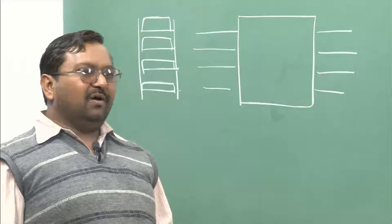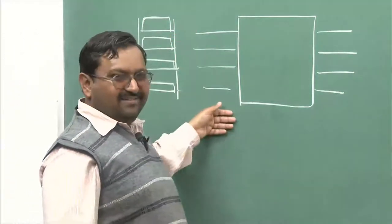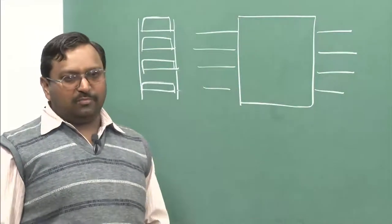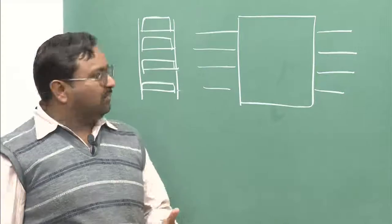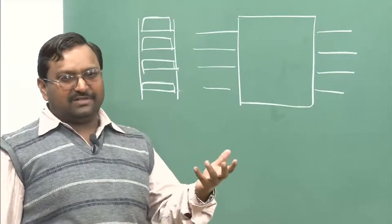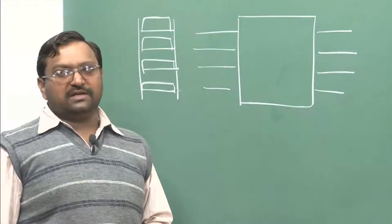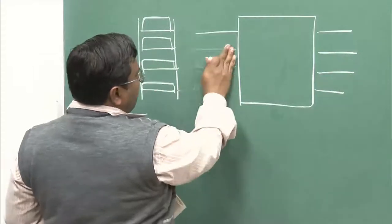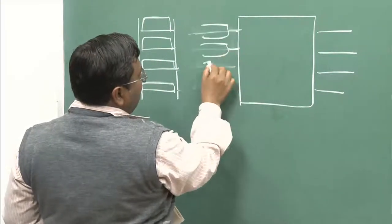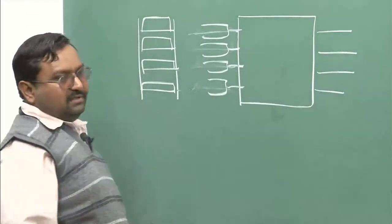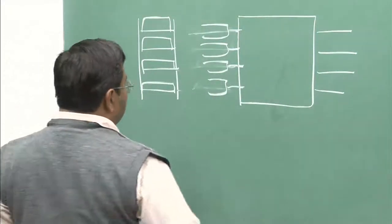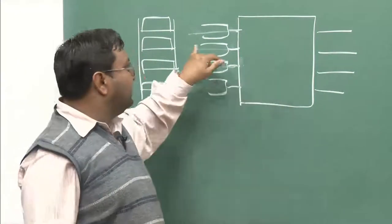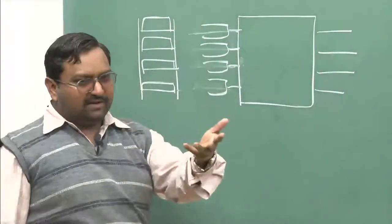One of the packets has to be either dropped or buffered if you keep memory here. If you do not keep memory, the packet will simply be dropped — only one of the many contending packets will go to the outgoing port. We can improve this situation and try to minimize loss by providing buffers or queues at the input port. The first idea is to keep buffers here — these are known as input queued switches. The important thing is that the switch still operates at the same rate as the input and output lines.